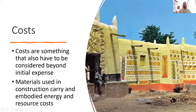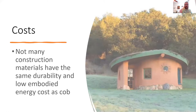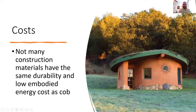After the initial construction, you also need to think about the embodied energy costs of the materials you're using — the manufacturing to make the products and the transport to get them to your site. When you're looking for a combination of low embodied energy and durability, you really can't do much better than cob or other forms of earthen construction.